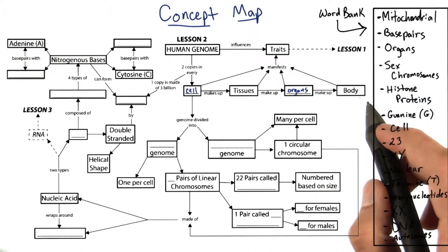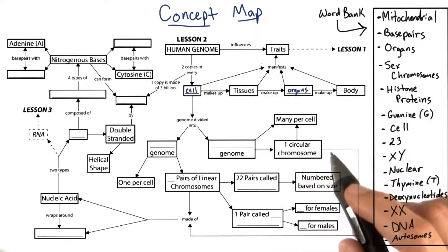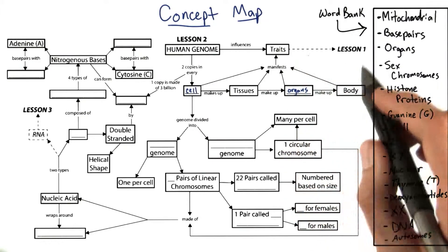Cells, tissues, organs, and the body together manifest traits, which are influenced by the human genome. We learned a bit about traits in lesson one.